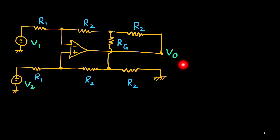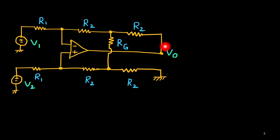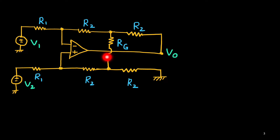In the circuit you will see there is one op-amp and we have two sources V1 and V2, connected to inverting and non-inverting terminals through resistance R1 each, and the output is taken from here. You will see two resistances R2 on each side. This end is grounded, and in between here RG is connected — it is a bypass one, connected between these two nodes.